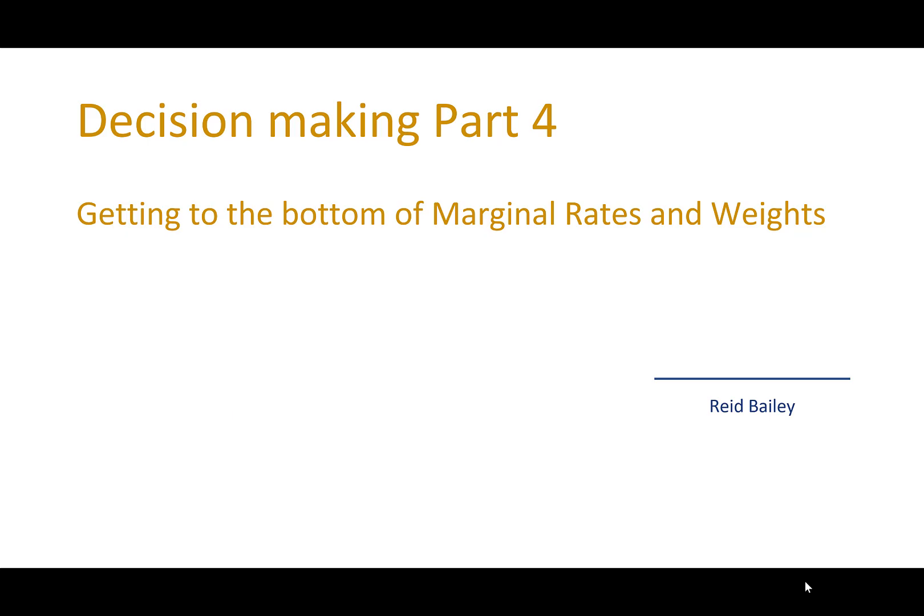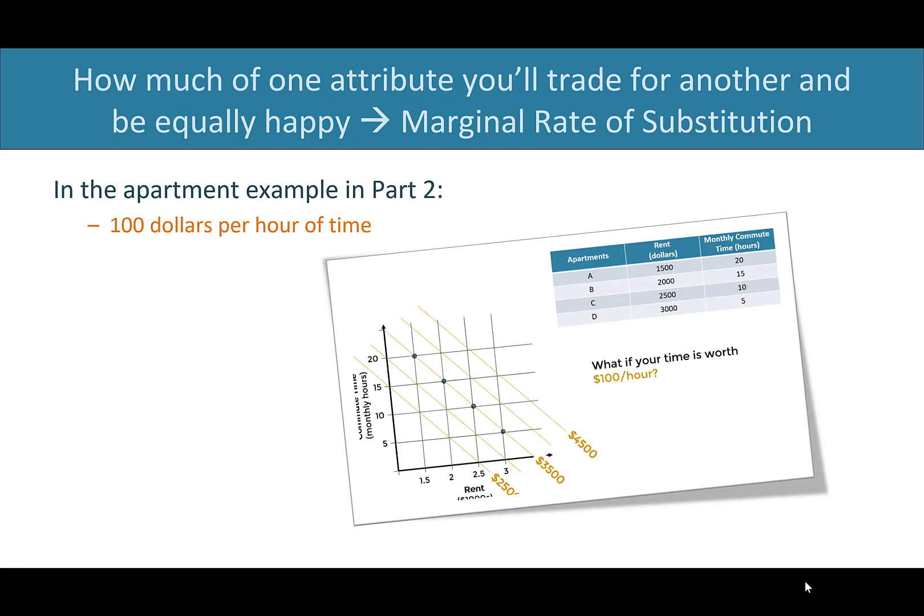As we dig into multi-objective decision-making, we really need to get into the relationship between marginal rates of substitution, which you learned about in part two, and weights, which we just talked about in the college example.